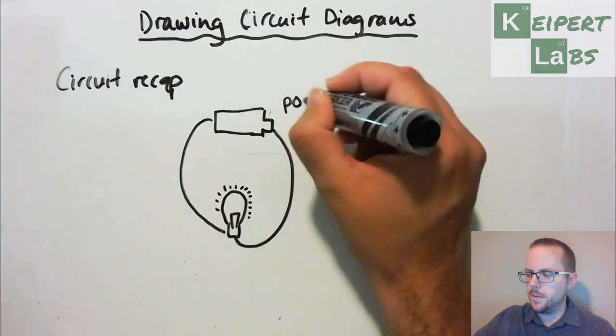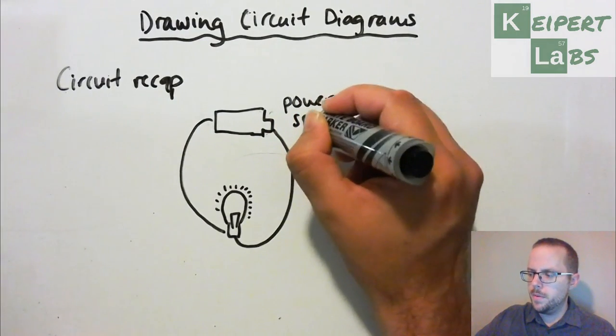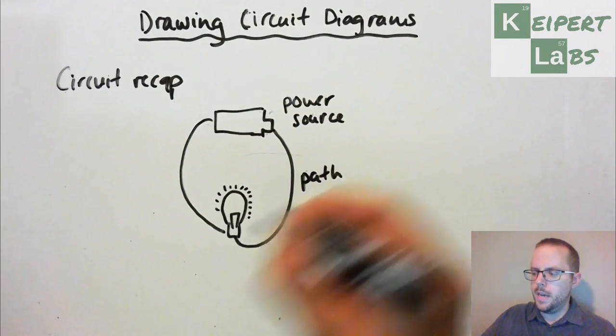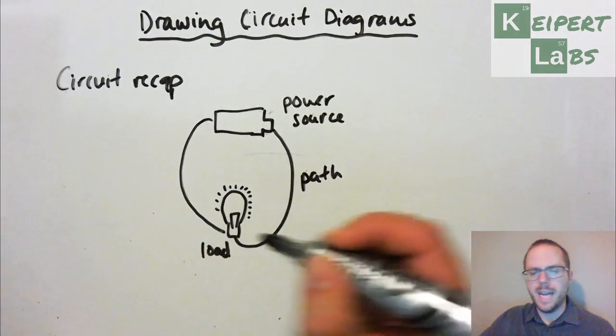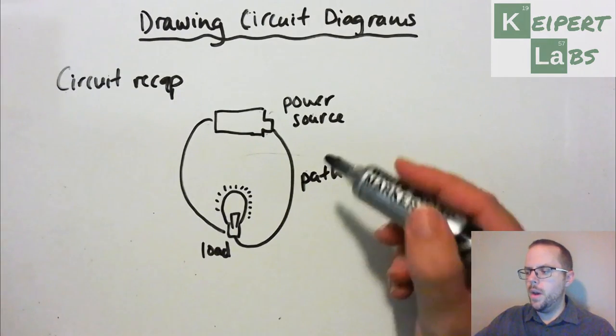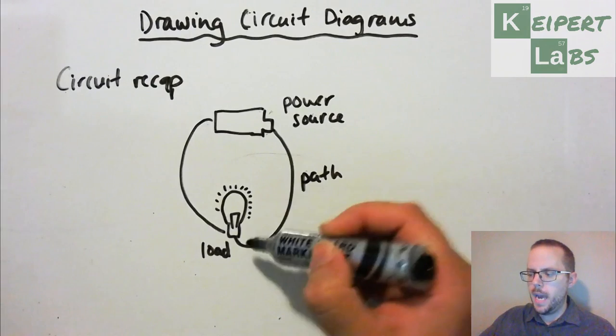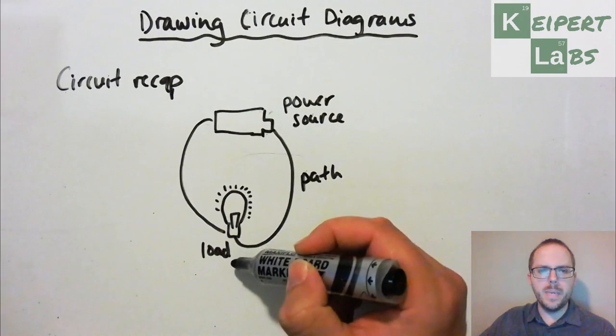And so we said that each circuit has three parts to it. A power source, a path, and a load, as the technical terms for it. So where the energy starts from, how it travels, and where it is being used.